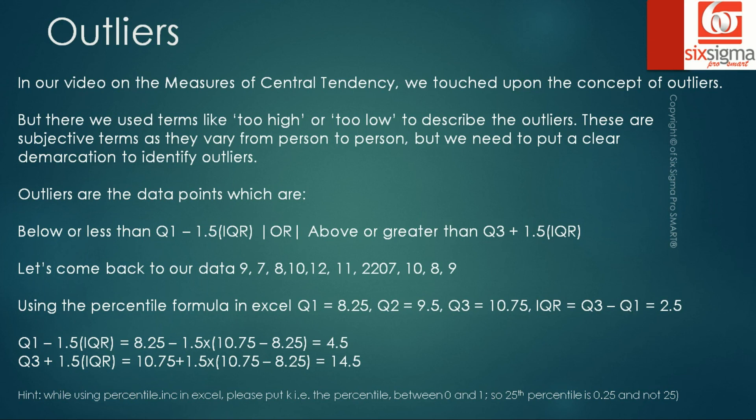Based on these calculations we can easily define the boundaries, and if we have an outlier present, we can decide on the right measure of central tendency as well as the right measure of dispersion. We'll talk more about outliers when we cover box plots, but this video concludes the measures of dispersion. If you liked this video, please don't forget to share and subscribe. Thank you.